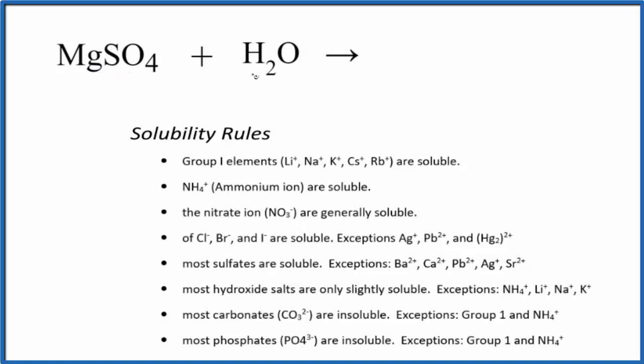So first off, when we have magnesium sulfate, it comes in two primary forms. We have just MgSO4, called the anhydrous form, and we can have a hydrate where there's water molecules around it. That would look like this. So for both of these, they are soluble in water.